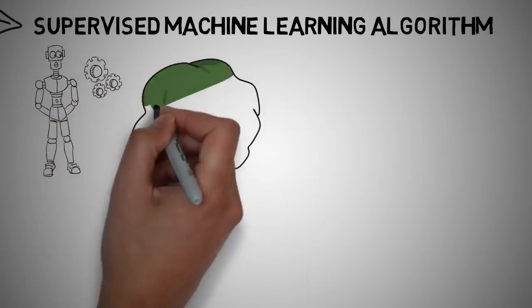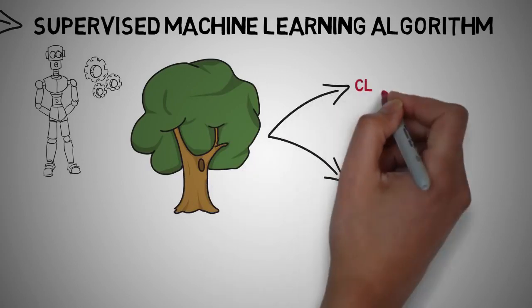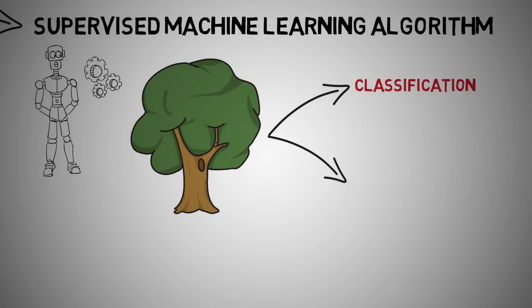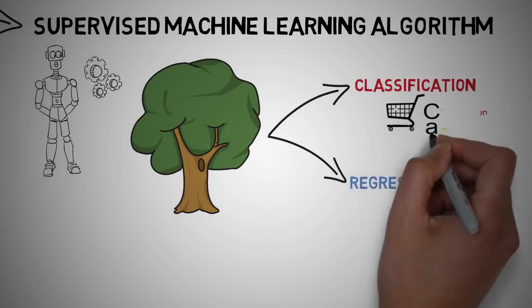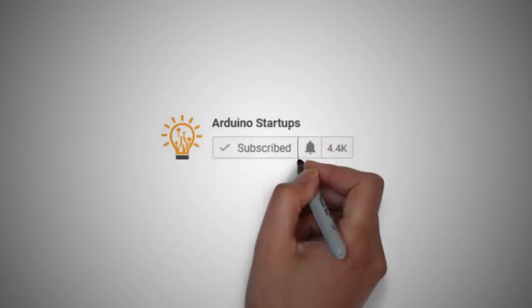A tree has many analogies in life and turns out it influences a wide area of machine learning, covering both classification and regression trees, otherwise known as CART. Please join our notification brigade by subscribing and clicking that bell icon.